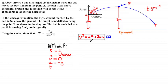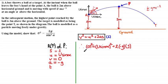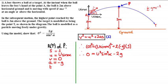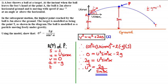Substituting these terms into the equation, we get: zero squared equals (u sine alpha) squared plus two times (negative g) times one. Expanding the brackets: zero equals u squared sine squared alpha minus 2g. Adding 2g to both sides: 2g equals u squared sine squared alpha. Dividing both sides by sine squared alpha gives us u squared equals 2g over sine squared alpha, which proves our result.